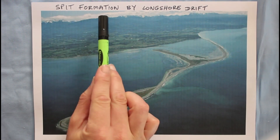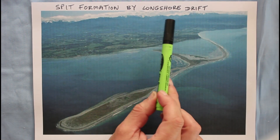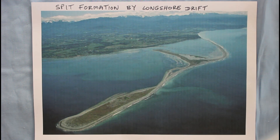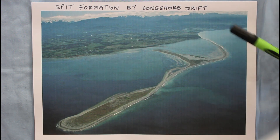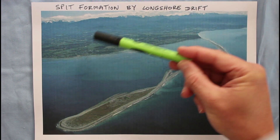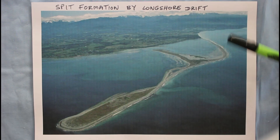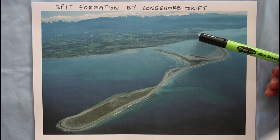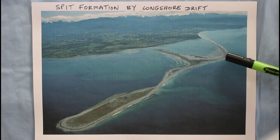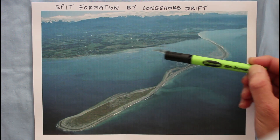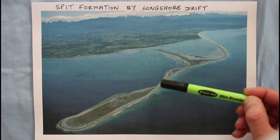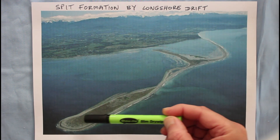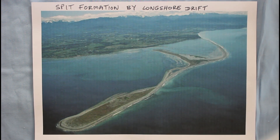This session is on spit formation through the process of longshore drift. A spit is a ridge of land that stretches out into the sea. In this picture, here is the mainland, here is the ocean, and coming off the edge of the mainland you can see this ridge of land — this finger of land that stretches for miles into the sea. This is known as a spit.